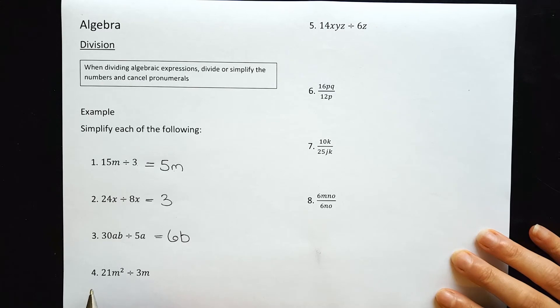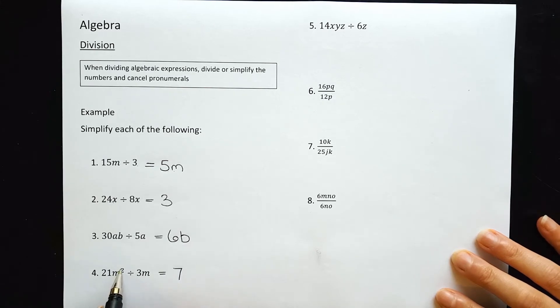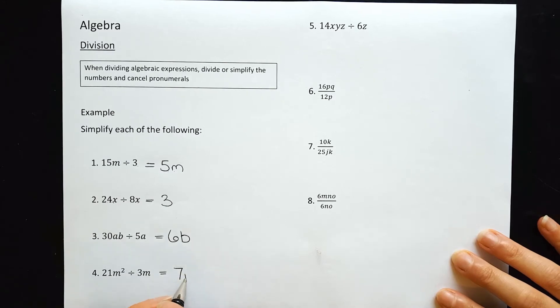Question 4: 21m squared divided by 3m. Let's divide the numbers: 21 divided by 3 goes 7 times. Now we have m squared and an m for the second term. This m will cancel one of the m's from m squared, because remember m squared is really m times m. So it cancels one, leaving one more to sit with the 7.